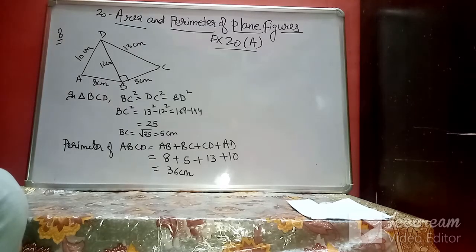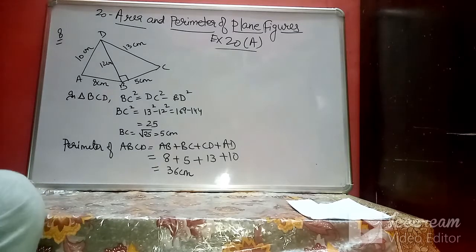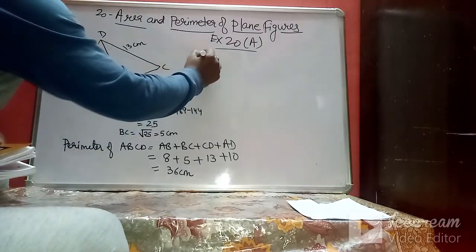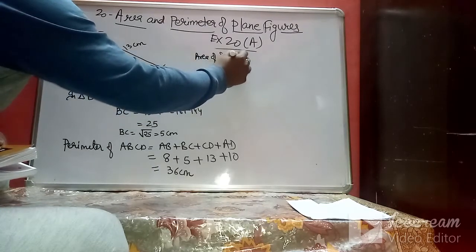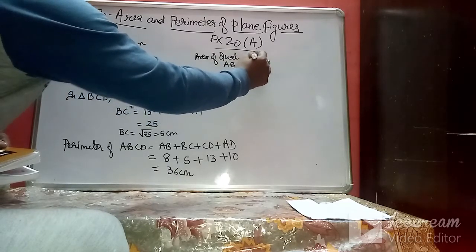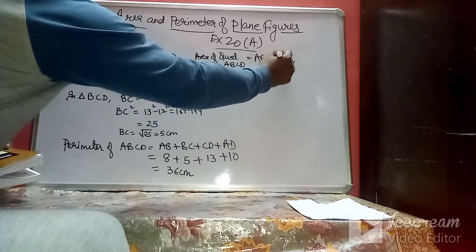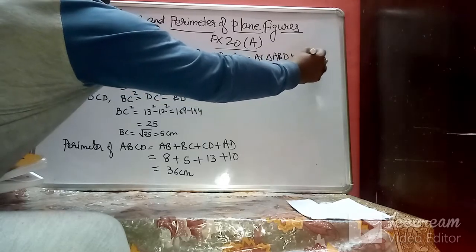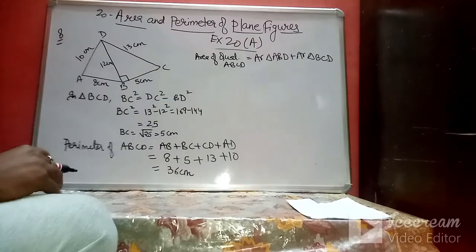Next we find the area of this quadrilateral ABCD. The area of quadrilateral ABCD equals the area of triangle ABD plus the area of triangle BCD, since the quadrilateral is made up of these two triangles.